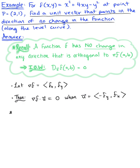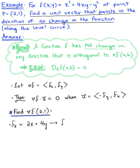The first thing we need to do is find the gradient vector at the point (2, 1). We need the partial derivatives. The partial derivative of the function with respect to x is 2x + 4y. Evaluating at (2, 1): 2 times 2 is 4, plus 4 times 1 is 4, which gives us 8.